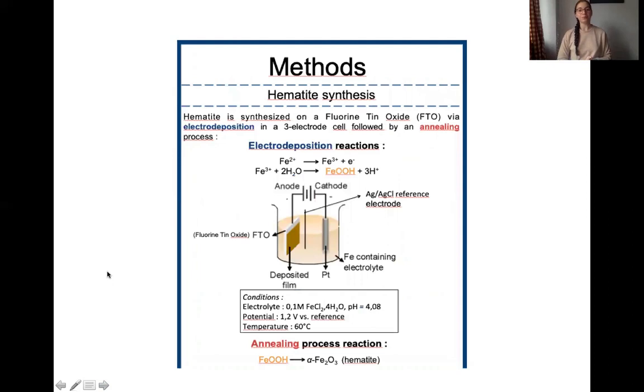In lab, we synthesize our hematite on fluorine oxide via electrodeposition in a three electrode cell, followed by an annealing process to get our final hematite.